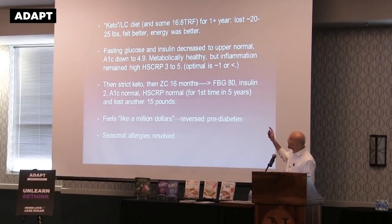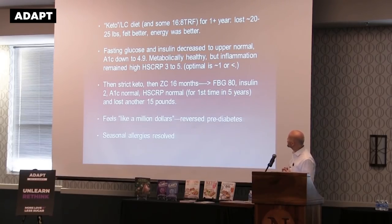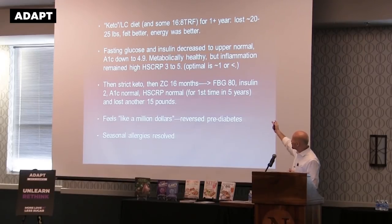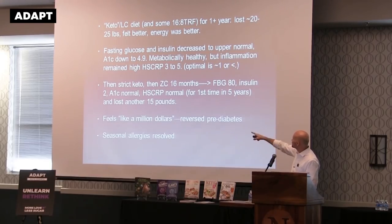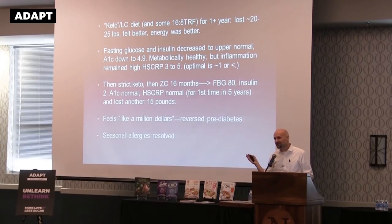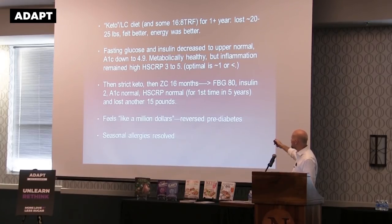So what did he do? A keto low-carb diet and some time-restricted feeding for about a year. Lost about 20 to 25 pounds, felt better, energy improved. Fasting glucose and insulin decreased to upper normal, A1c came down to 4.9. But the inflammation markers stayed high in the 3-to-5 range — optimal is less than 1. Then he went strict keto, then zero carb — the carnivore diet — was going to do it for 30 days, and has now been doing it for 16 months.